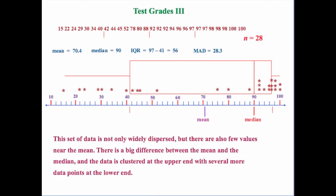Let's take a third set of test grades — again 28 data points. But this time our mean is different; now it's dropped to 70.4. Our median is 90 — the halfway point between the 28 values. Our third and first quartile values are 97 and 41, which is a difference of 56, so that's our interquartile range. And then the average distance of all our data points from 70.4 gives a mean absolute deviation of 28.3.